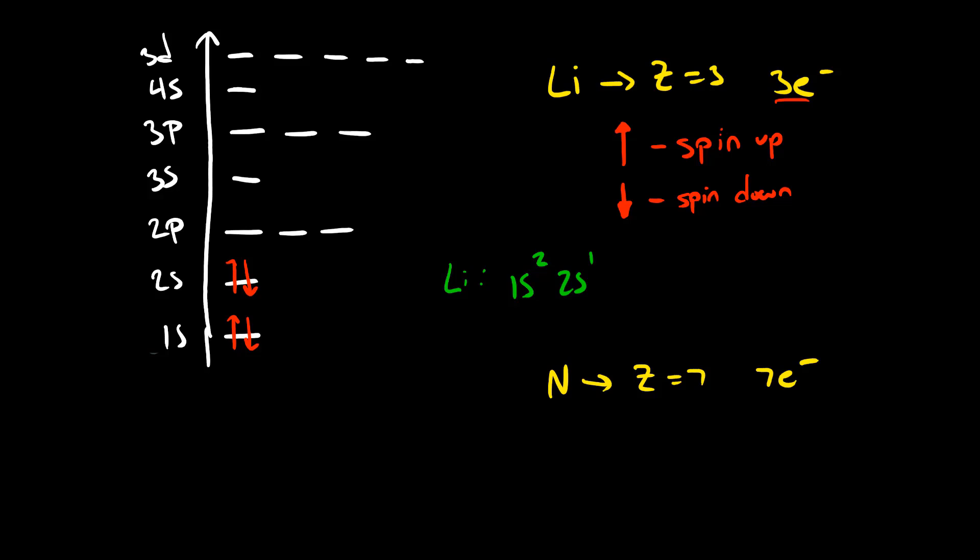We now reach the first situation where we have orbitals that have equal energy. Whenever you run into a situation where we have multiple lines at the same energy, you put one electron into each orbital first. So for nitrogen, we put the extra three electrons into one orbital at a time, one p-orbital at a time. We've used all seven right now, and each of the p-orbitals in nitrogen have one unpaired electron.